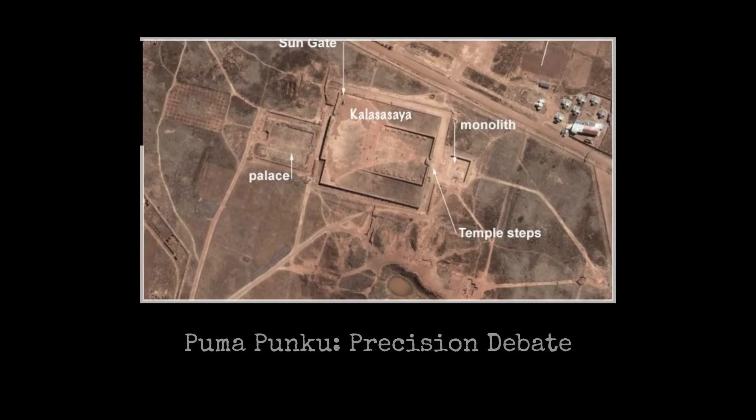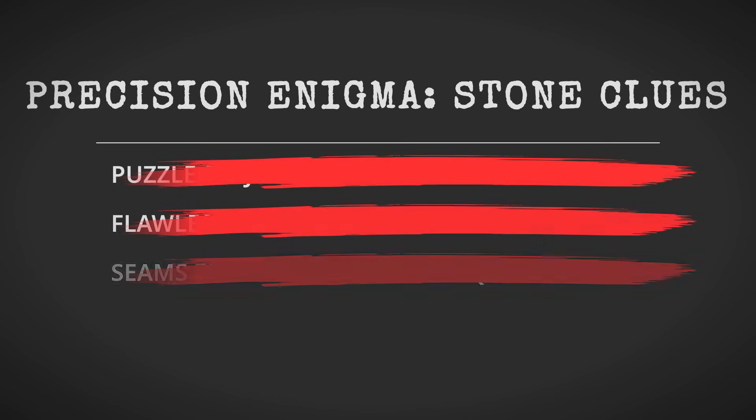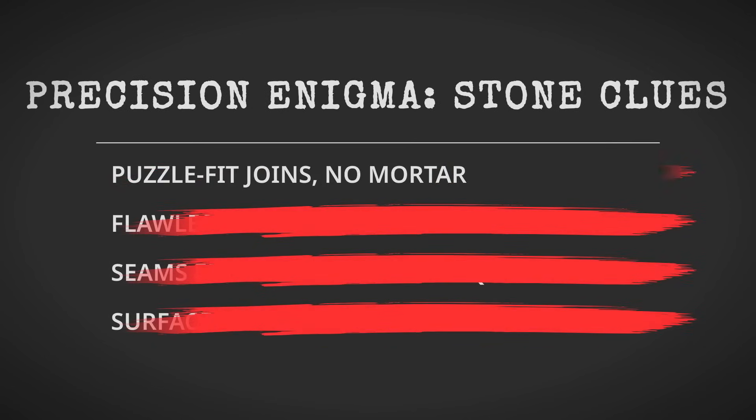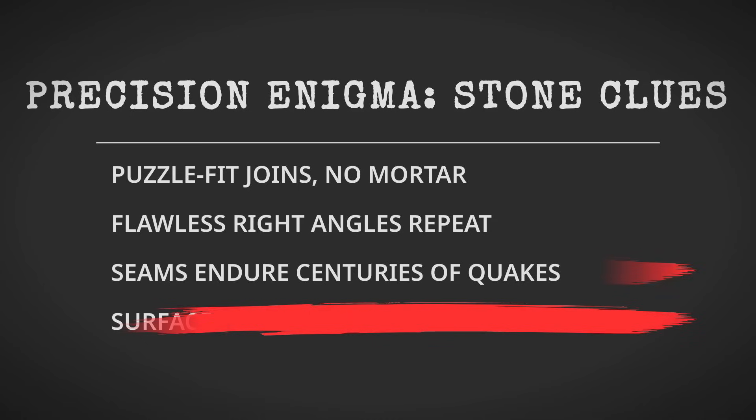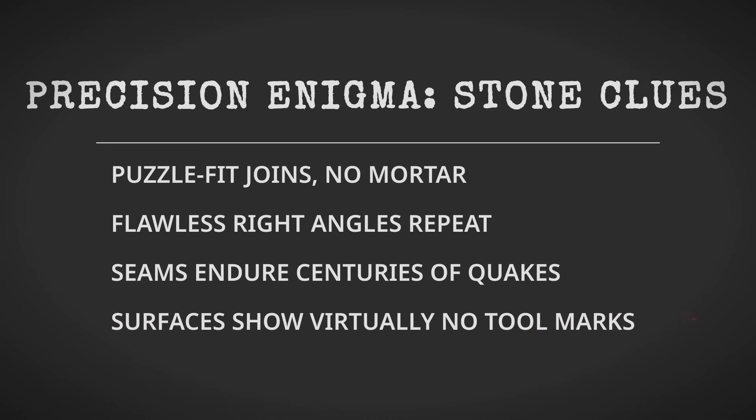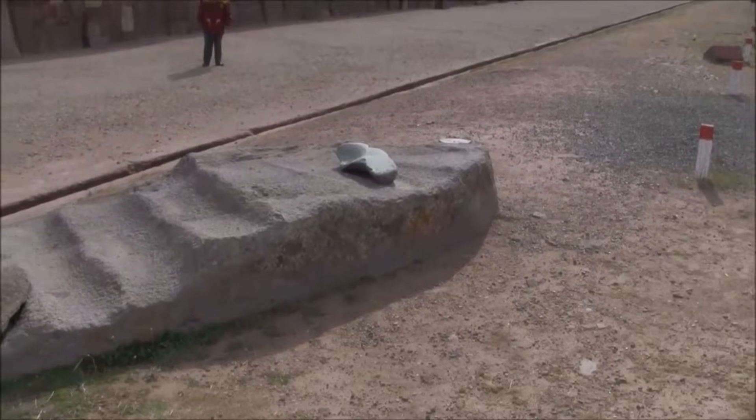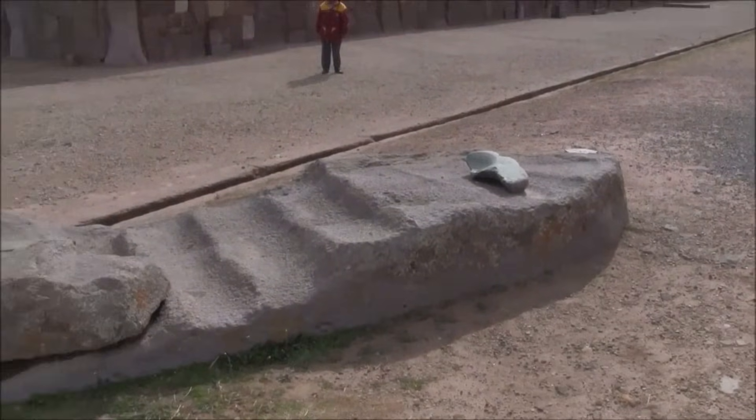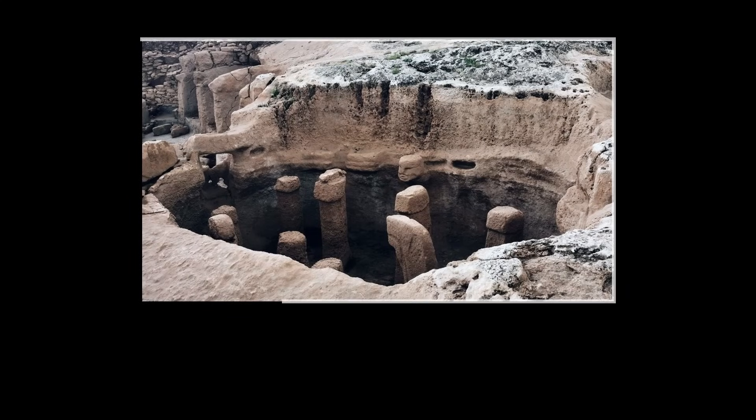The debate over Puma Punku's construction is not just about tools or techniques, but about the limits of human ingenuity. The visual evidence—the puzzle-like joins, the undisturbed geometric patterns, the absence of obvious tool marks on many surfaces—forces both skeptics and believers to confront the same question. What knowledge did the builders possess that allowed them to shape stone with such apparent ease? The answer remains elusive, buried beneath the scars of history and the silence of the stones themselves.